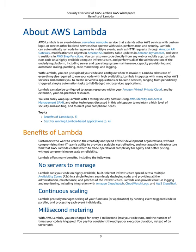Lambda responds to events such as HTTP requests through Amazon API Gateway, modifications to objects in Amazon S3 buckets, table updates in Amazon DynamoDB, and state transitions in AWS Step Functions. You can also run code directly from any web or mobile app. Lambda runs code on a highly available compute infrastructure and performs all administration of the underlying platform, including server and operating system maintenance, capacity provisioning, automatic scaling, patching, code monitoring, and logging. With Lambda, you can just upload your code and configure when to invoke it.